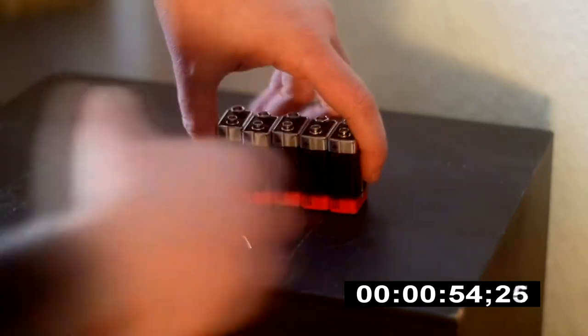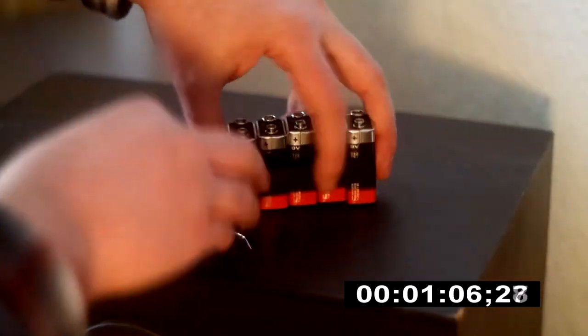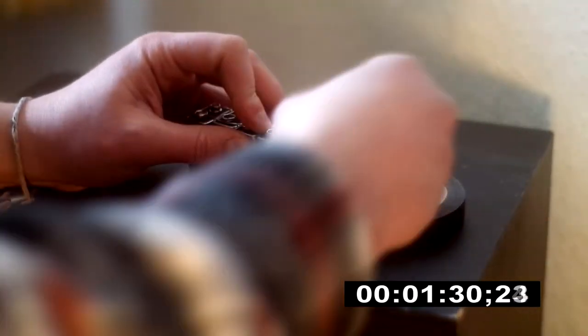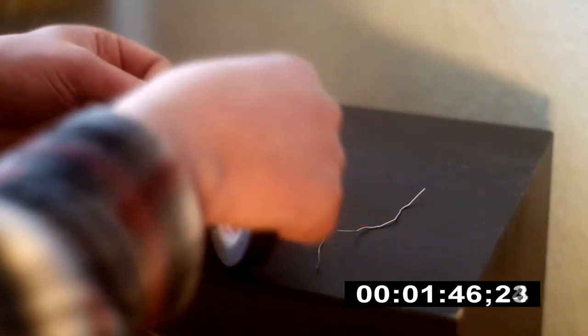You should arrange all the batteries so that all the polarities are the same on the same side. Then you tape all the batteries together, and after that, you add the paper clip in this wave shape to connect all the contacts of the batteries together.